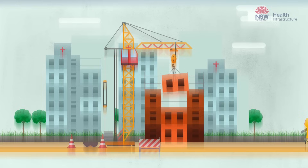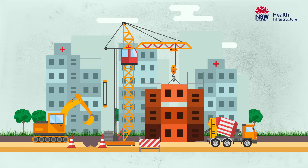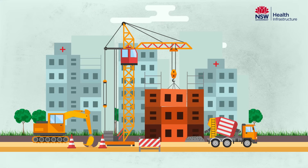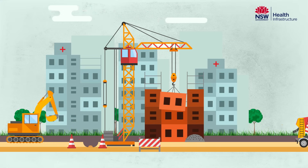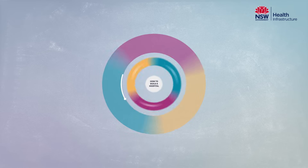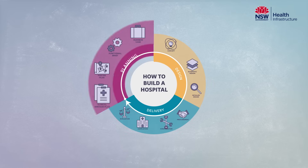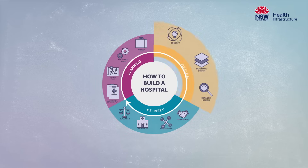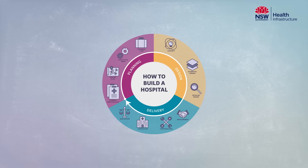Here at Health Infrastructure, we manage the Capital Works Program for NSW Health, overseeing health service redevelopments valued at $10 million and above. Every redevelopment undergoes three distinct phases – planning, design and delivery. This comprehensive process ensures our redevelopments meet the future health needs of the local community and staff.